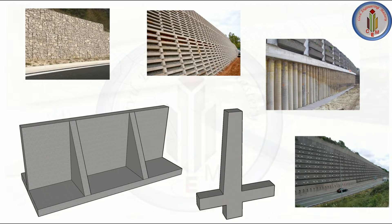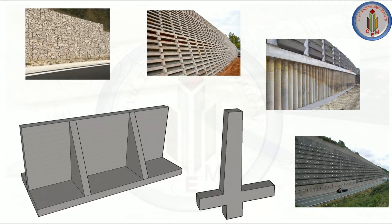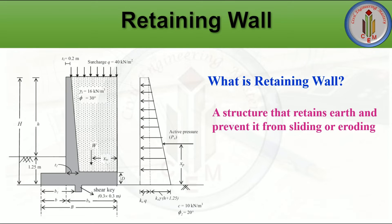Welcome back to Civil Engineering Mastery. Apart from the regular structural members like beam, column, and slab, we have another important type of structure — the retaining wall — which is mainly used to retain the earth. In this video we are going to discuss in detail about retaining wall: its functions, its importance, and the various types of retaining walls.